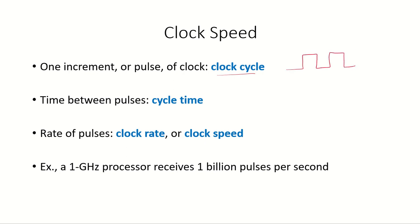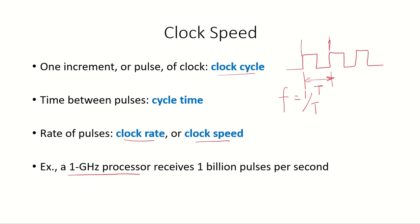One increment or pulse of the clock is referred to as the clock cycle. The time between pulses is known as the cycle time, and the rate of the clock is referred to as the clock rate or clock speed. The frequency equals 1 divided by T (the cycle time). For example, a 1 gigahertz processor receives 10 to the power of 9 pulses per second.